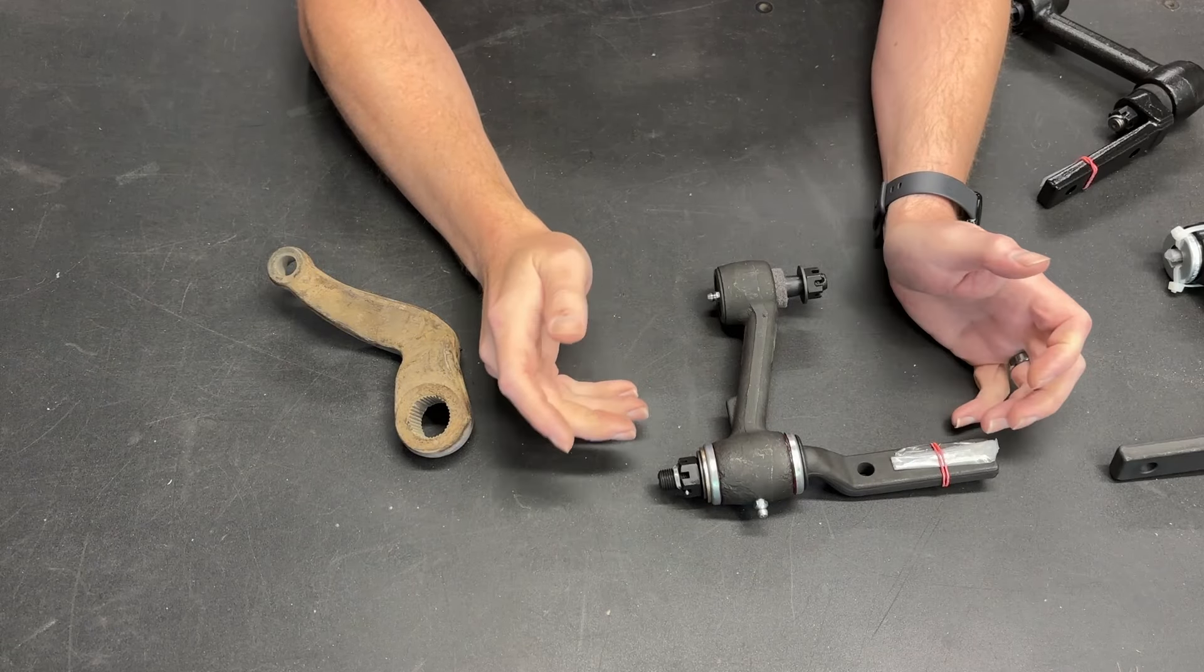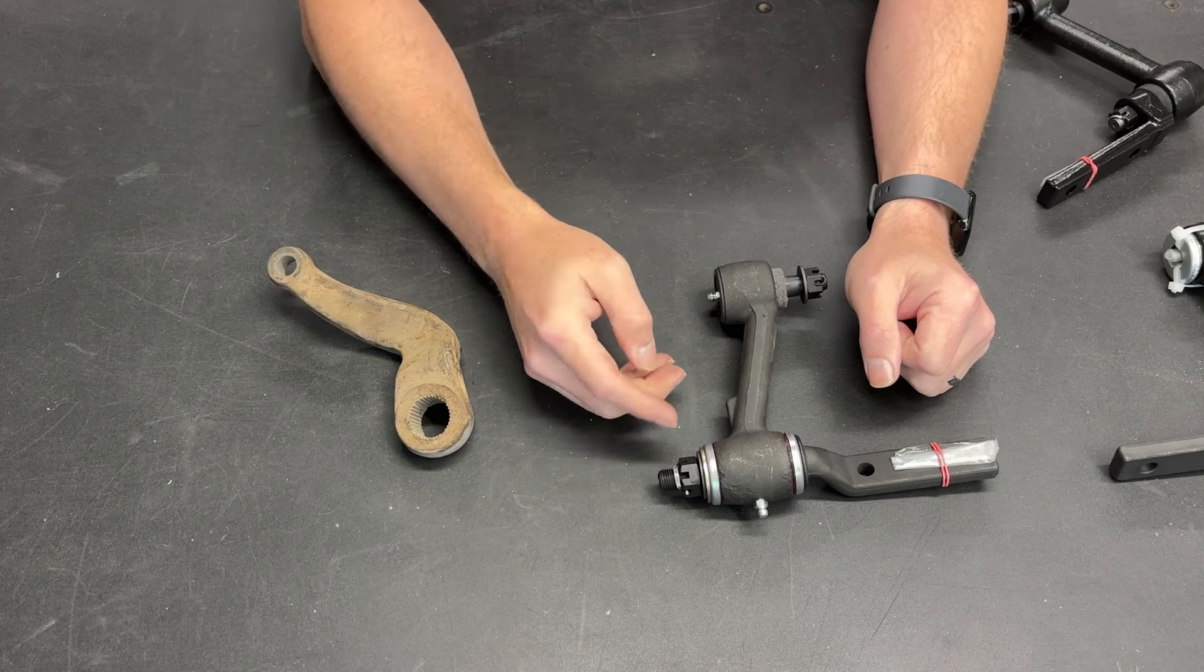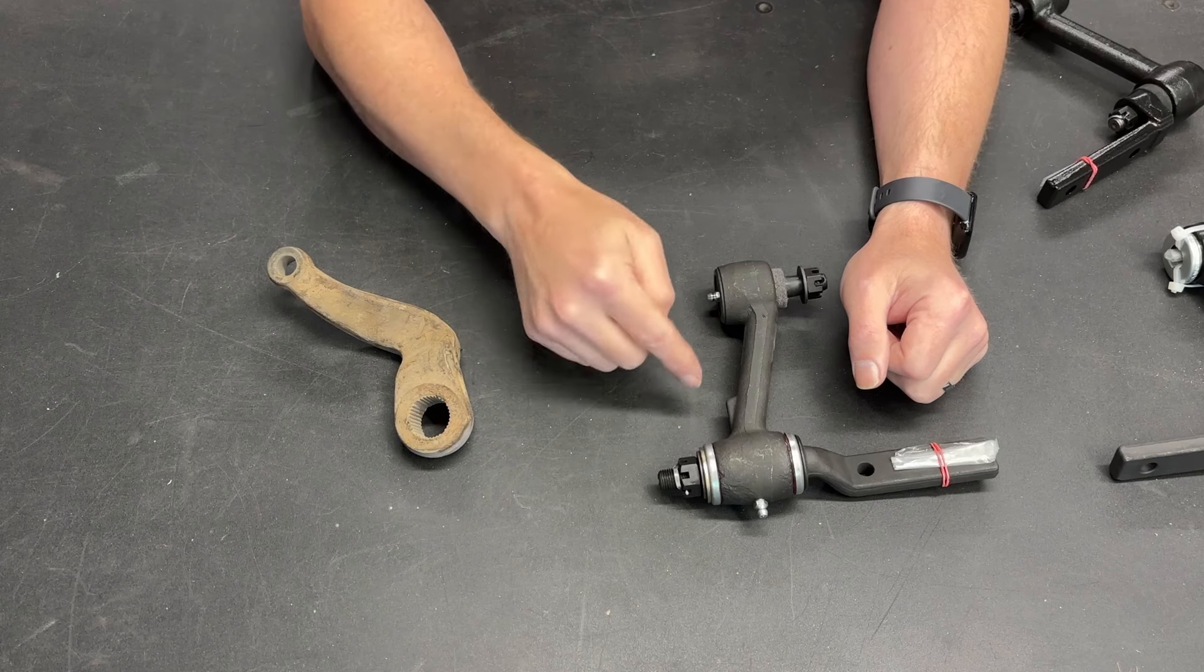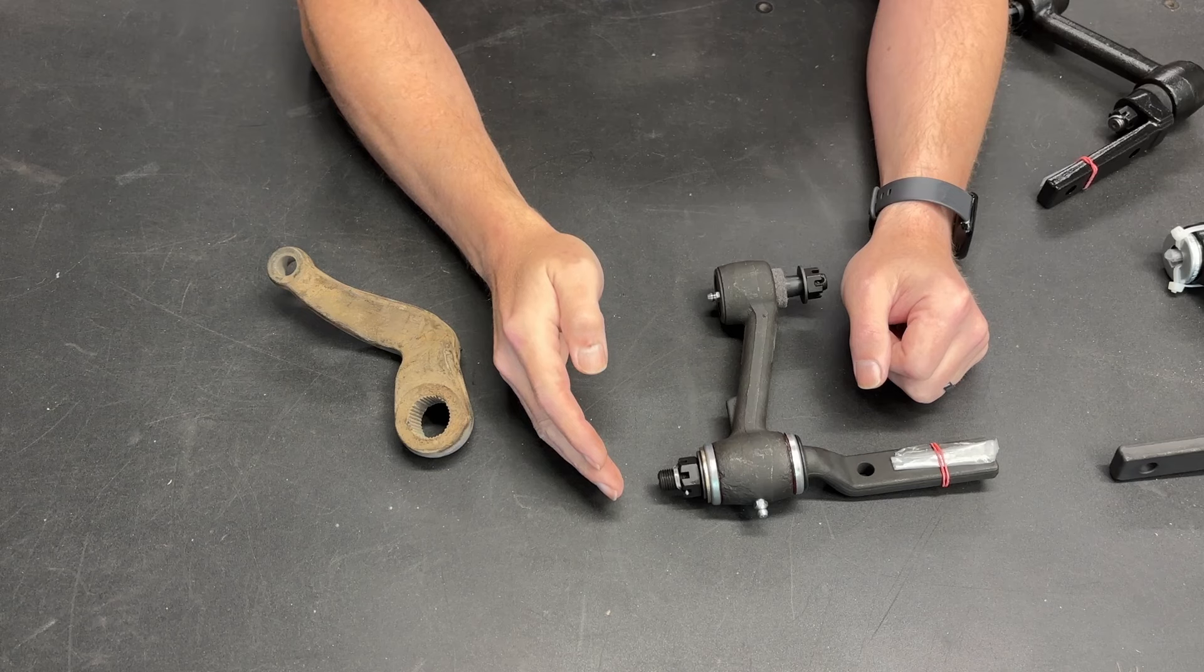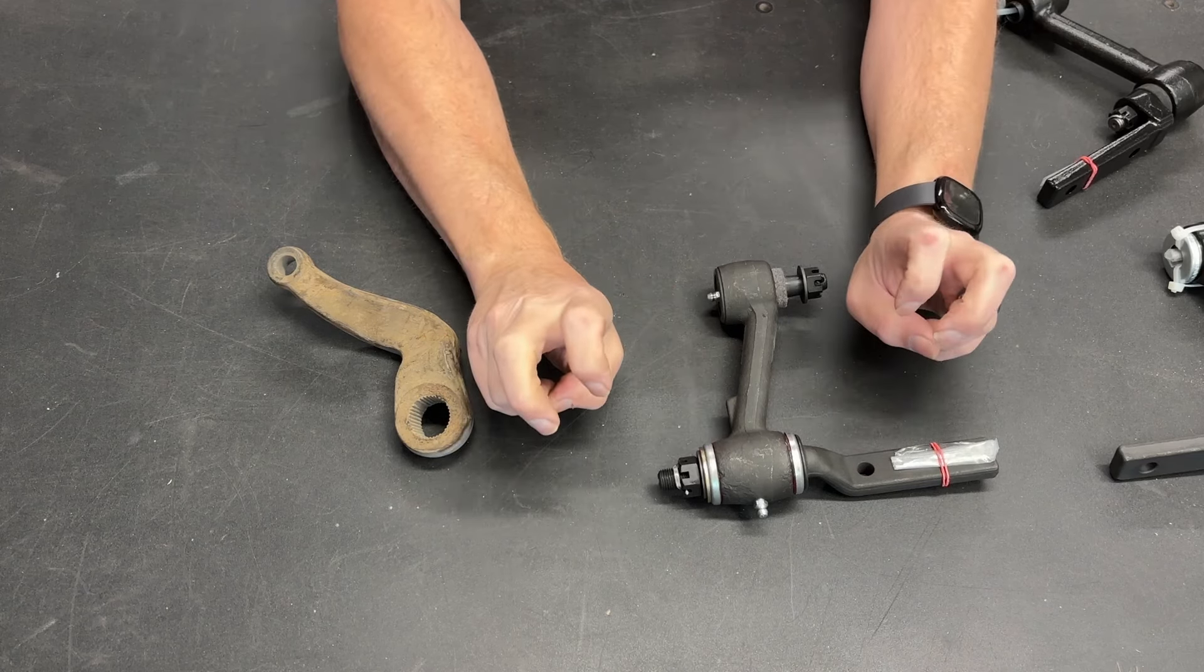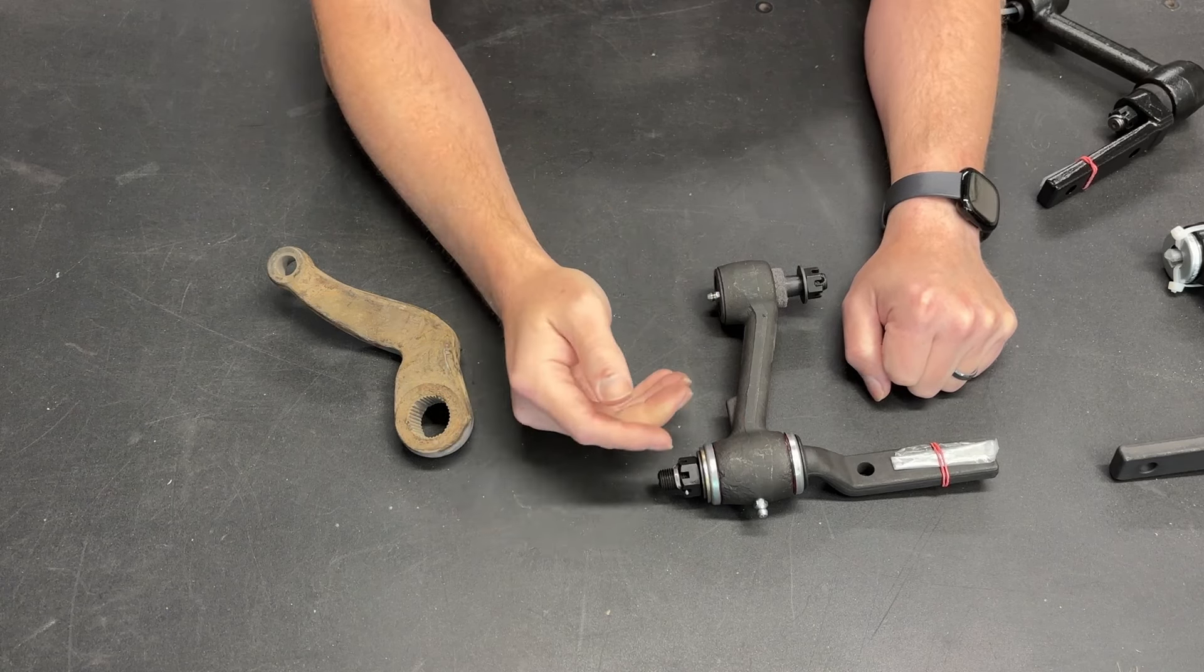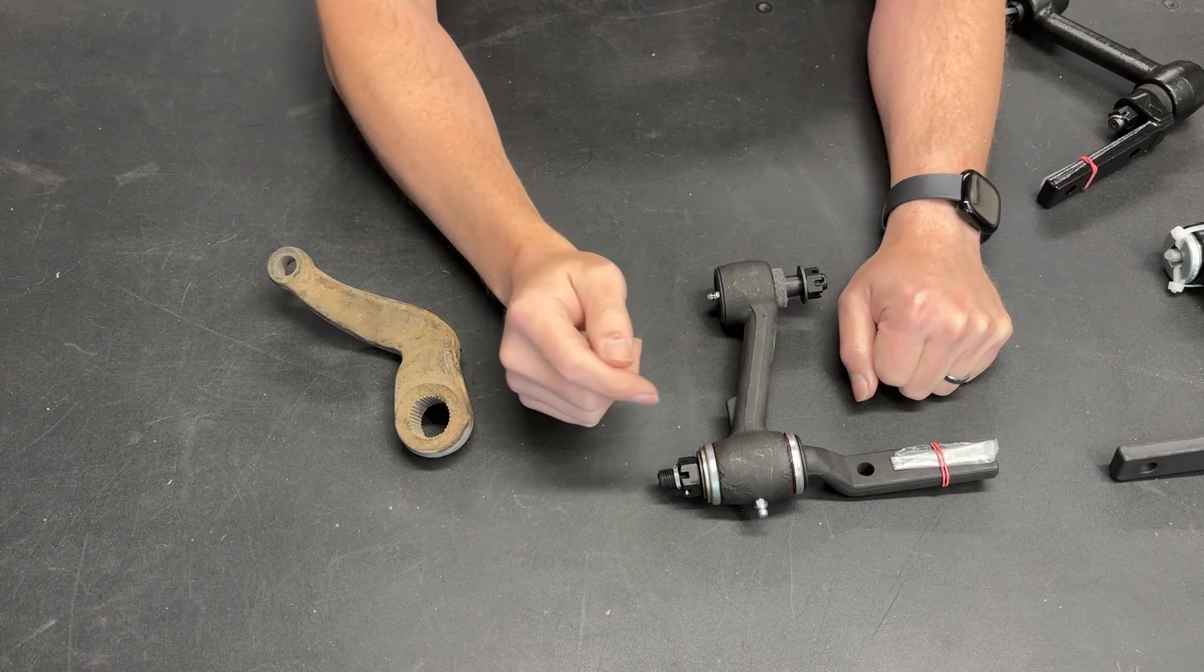Why do we do that? Well it helps the car handle better, but it also helps your steering return to center. So if you're putting a performance alignment in your car, it doesn't matter that the rubber bushing that helps return to center is no longer in this component, because the caster is going to do that job. And ultimately you're going to have a better handling vehicle because of those caster improvements.